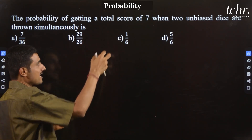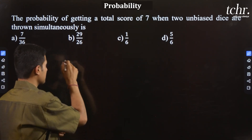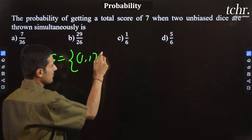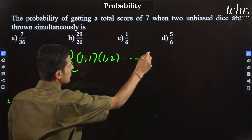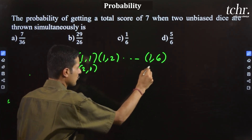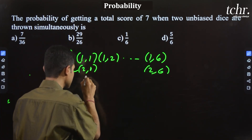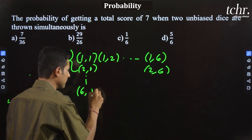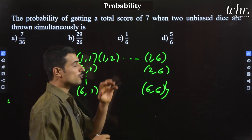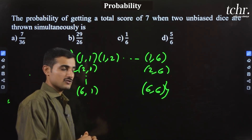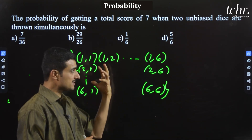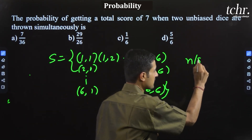That means when two dice are thrown, the sample space goes from (1,1), (1,2), up to (1,6), then (2,1), (2,2), up to (2,6), and so on up to (6,1) through (6,6). So how many outcomes? 36. So n of S is 36.